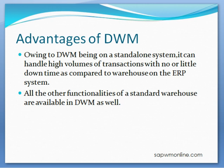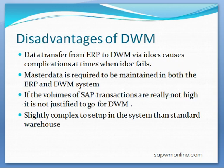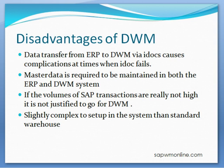The main advantage of a decentralized warehouse management system is that, owing to its being on a standalone system, it can handle high volumes of transactions with little or no downtime compared to a warehouse on the ERP system. All other functionalities of a standard warehouse are available in DWM as well. The main disadvantage is that all process initiation in the warehouse is through inbound delivery via IDOCs, which can fail and thus delay stock updates. Master data must be maintained in both ERP and DWM systems. If transaction volume is not high, DWM is not justified, and it is slightly more complex to set up than the standard SAP system.